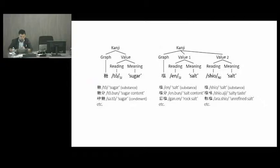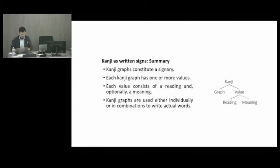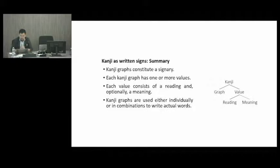I used this diagram to visually represent what I mean by graph, value, reading, and meaning. From now on I will put things in linear fashion and use a colon to indicate the association between the graph and its value. If there are more than two values, I will separate them using a vertical line. To sum up so far: kanji graphs constitute a signary in the Japanese writing system; each kanji graph has one or more values; each value consists of a reading and, optionally, a meaning; and kanji graphs are used either individually or in combination to write actual words.